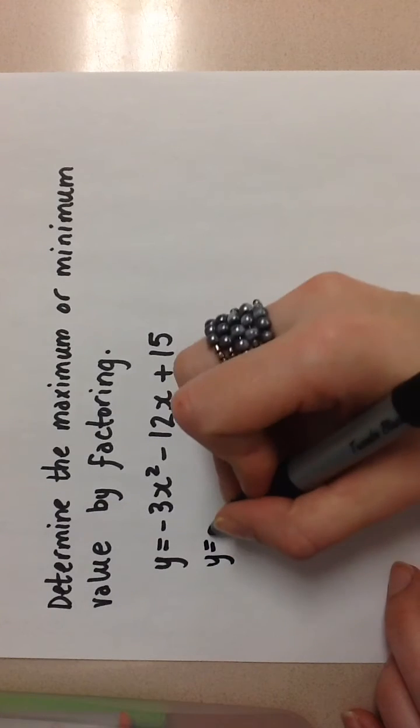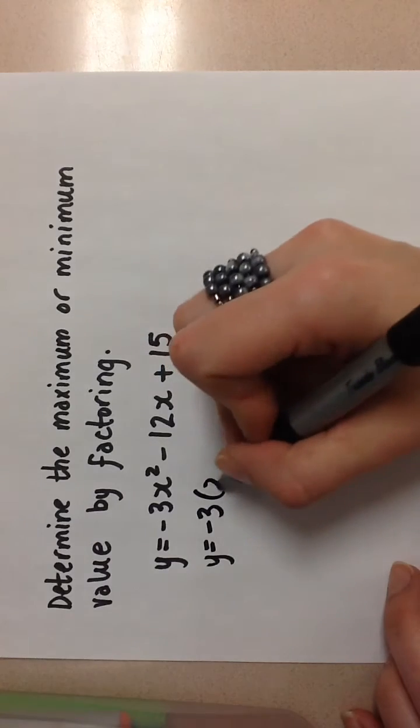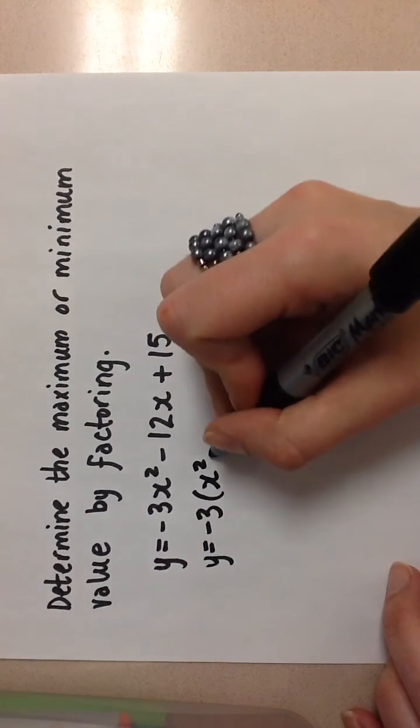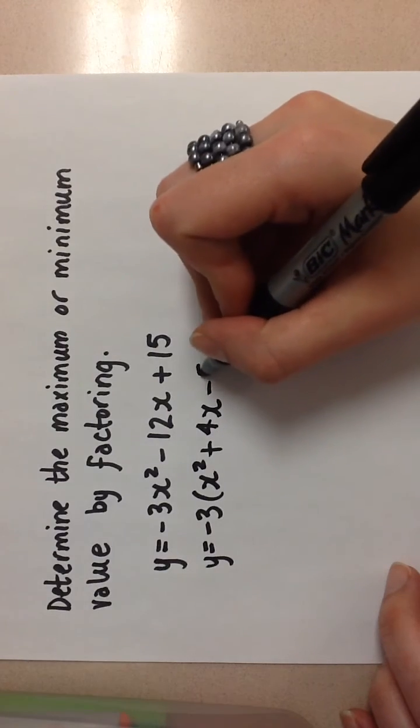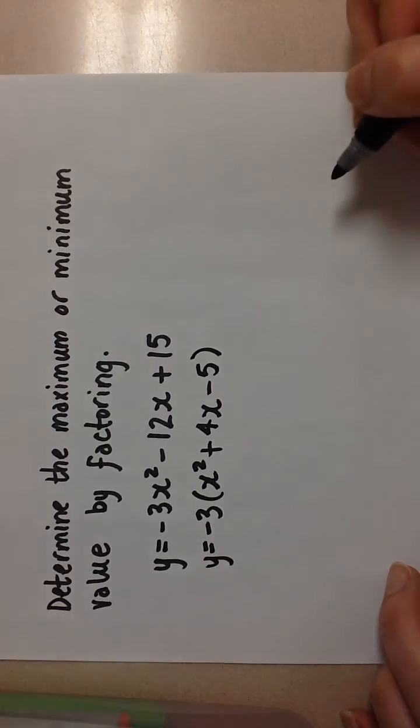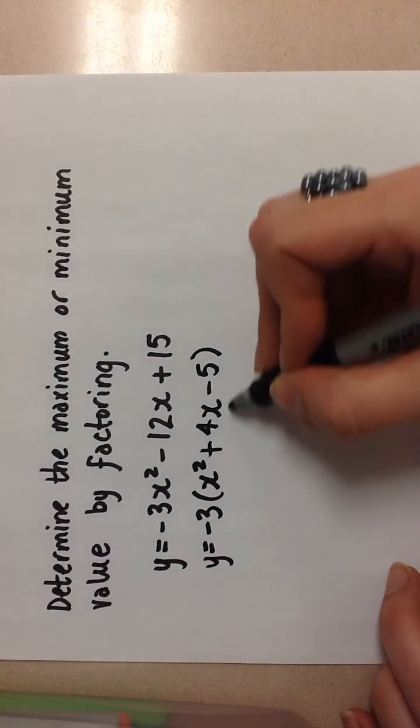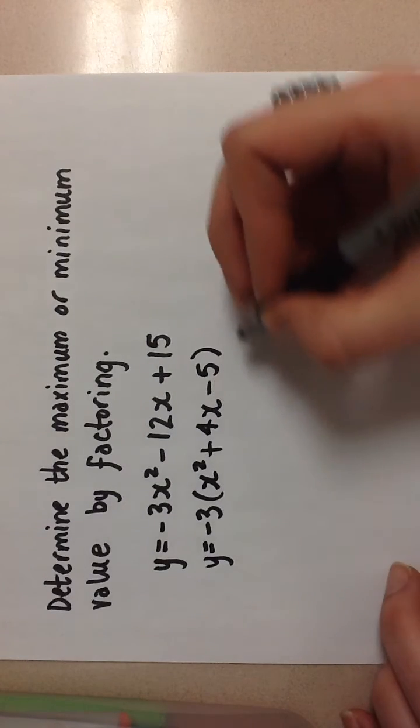so I'm going to pull that out before I start factoring. And I'm going to have x squared plus 4x minus 5 in my brackets. Now I'm left with a simple trinomial to factor.